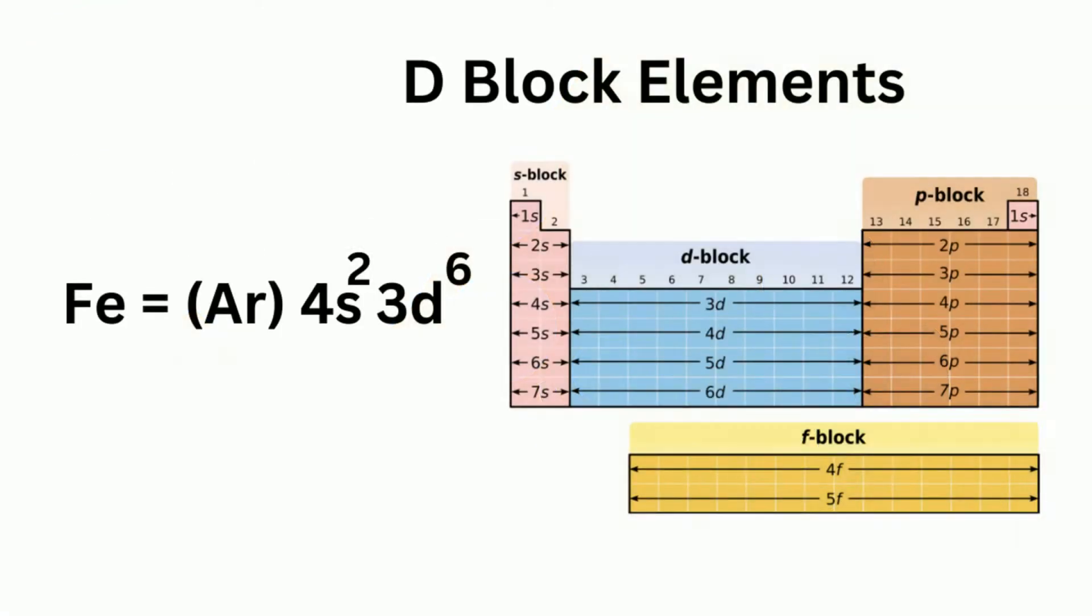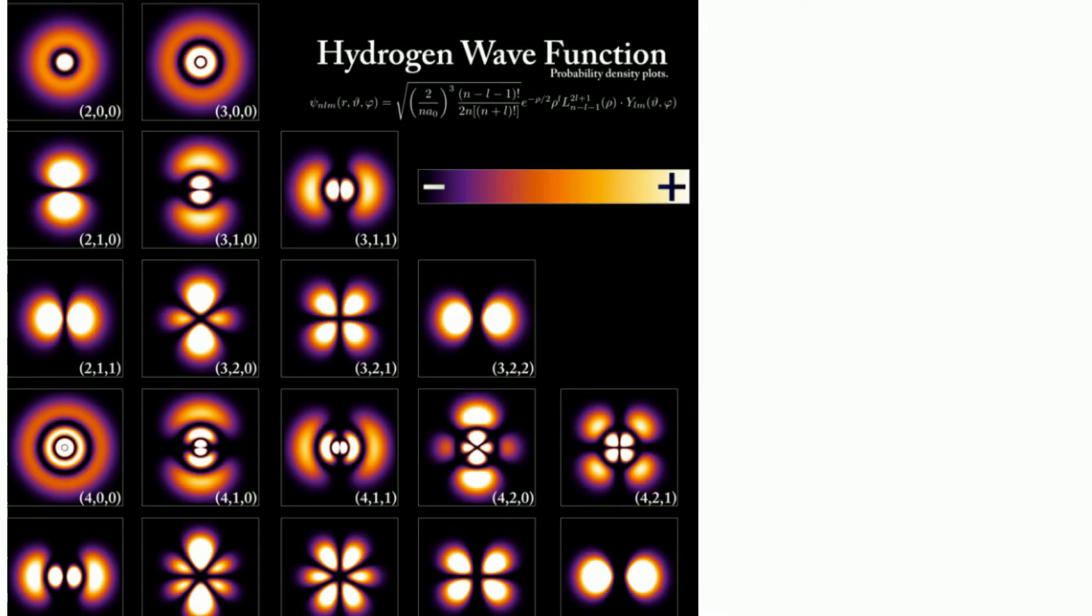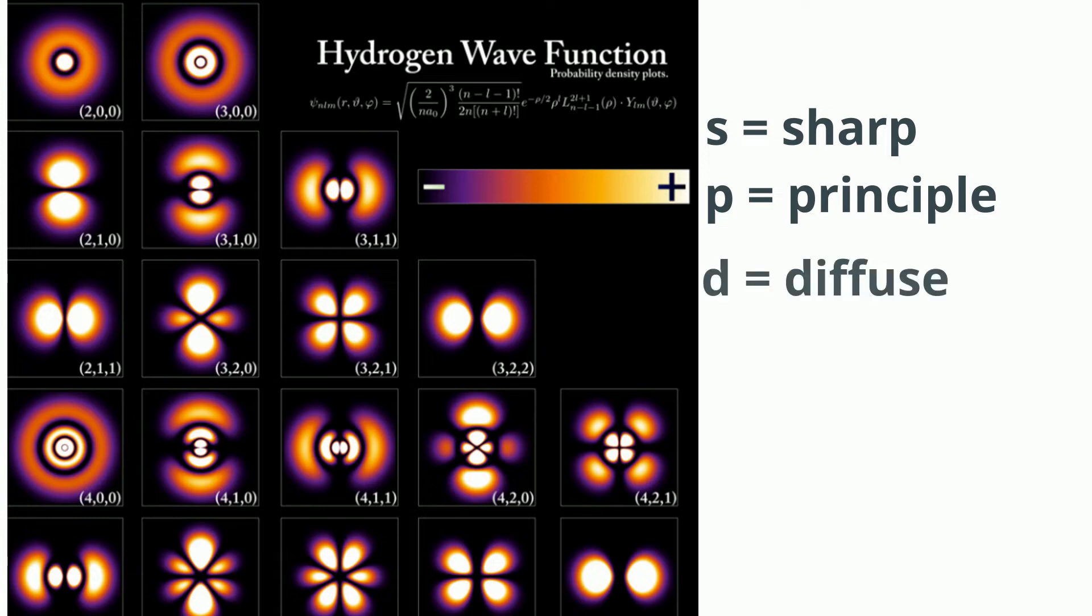This element from the D block has the last electrons in a D orbital. A little bit of trivia. The orbitals are named from the descriptions of the spectroscopic lines of atomic spectra. S is sharp, P is principal, D is diffuse, and F is fundamental.